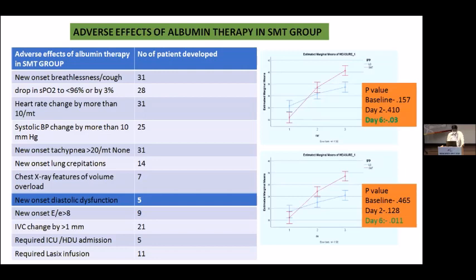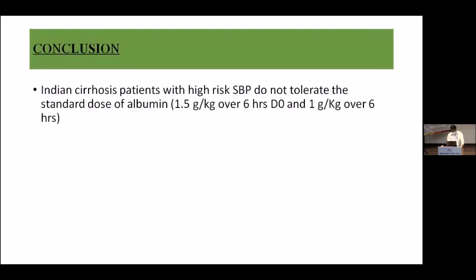Looking at right atrial and right ventricular dimension changes, at day 6 a clinically significant difference was seen in the standard medical therapy arm — shown in pink — where right atrial and right ventricular dimensions changed significantly, indirectly corresponding to fluid overload. The conclusion of this study is that Indian cirrhosis patients with high-risk SBP do not tolerate the standard dose of albumin of 1.5 gram per kg over six hours and 1 gram per kg on day 3.